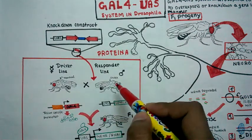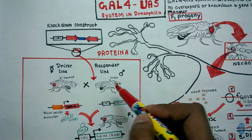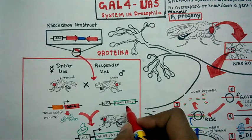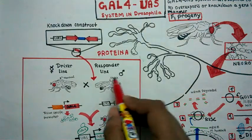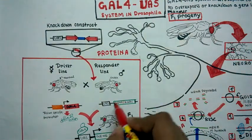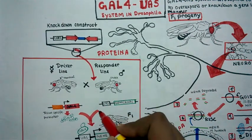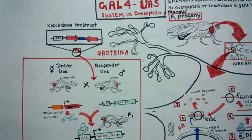And in the responder line, the particular gene of the RNAi construct or the overexpression construct for the particular gene is actually placed in the chromosome of the responder line under UAS control. So now we would look at the genetic crosses behind it.